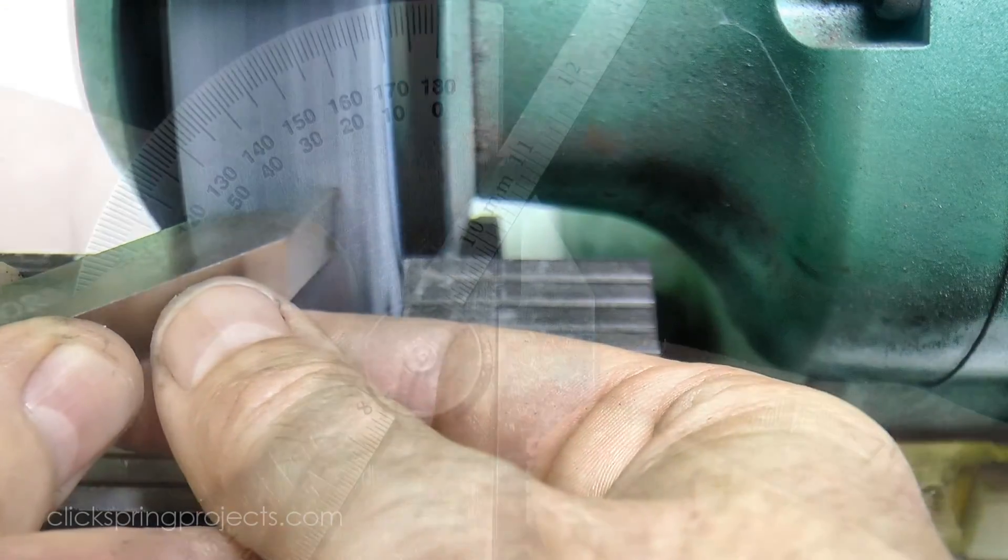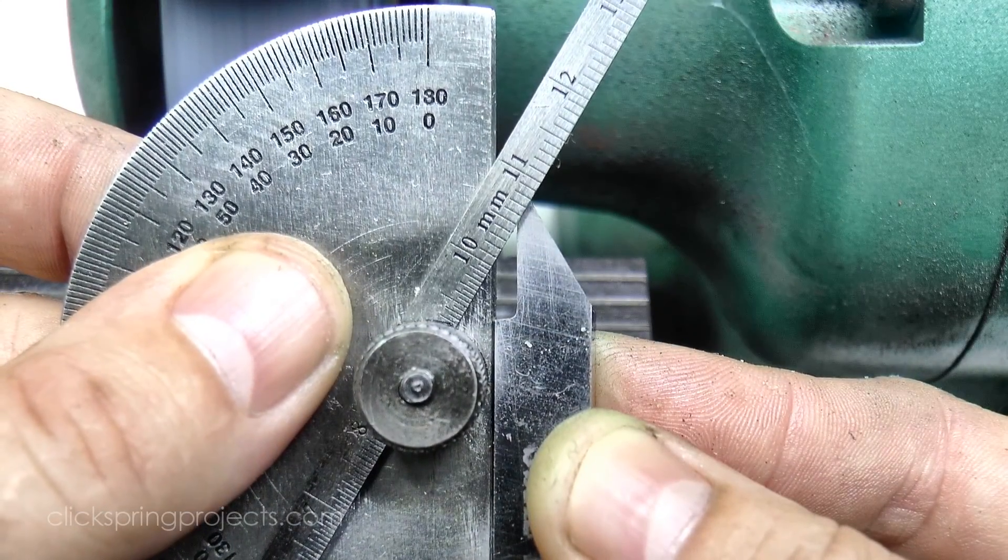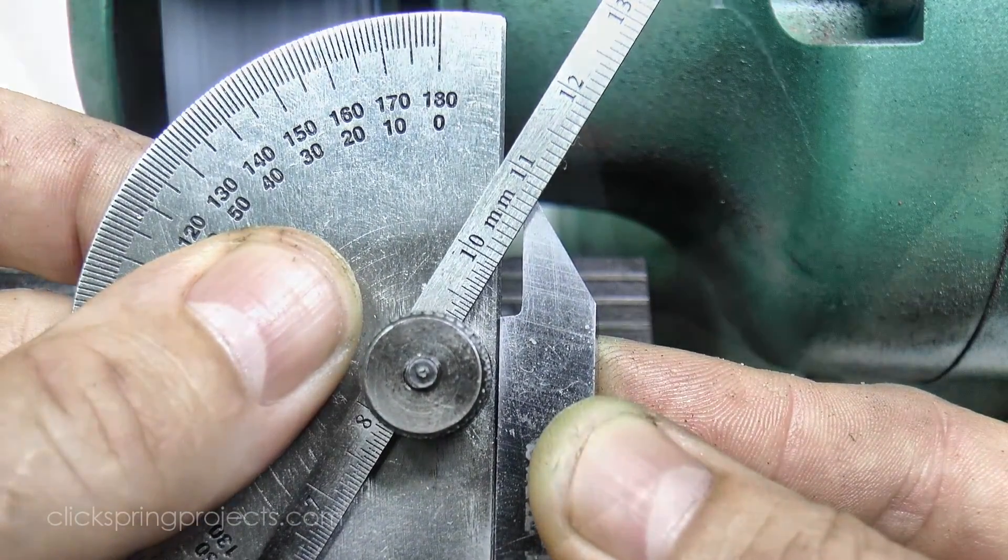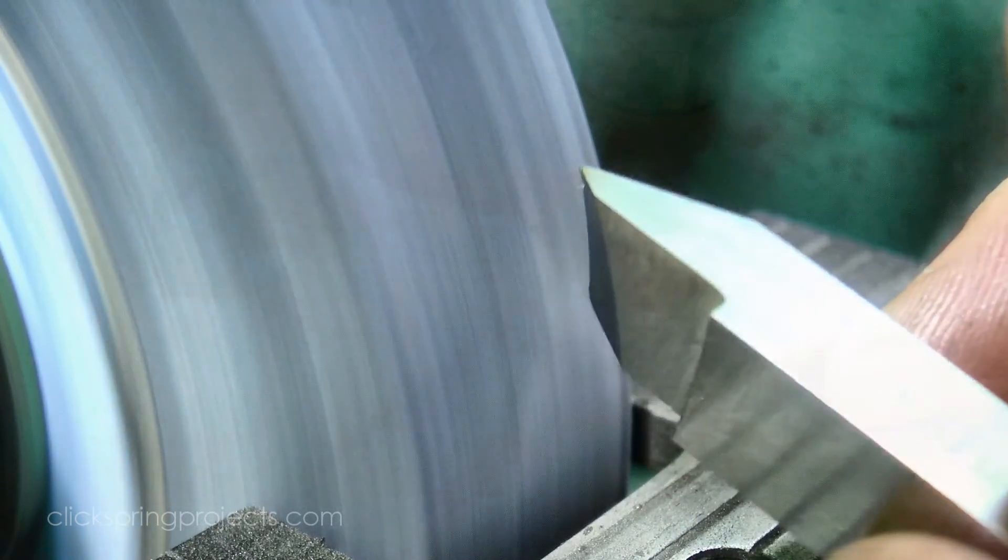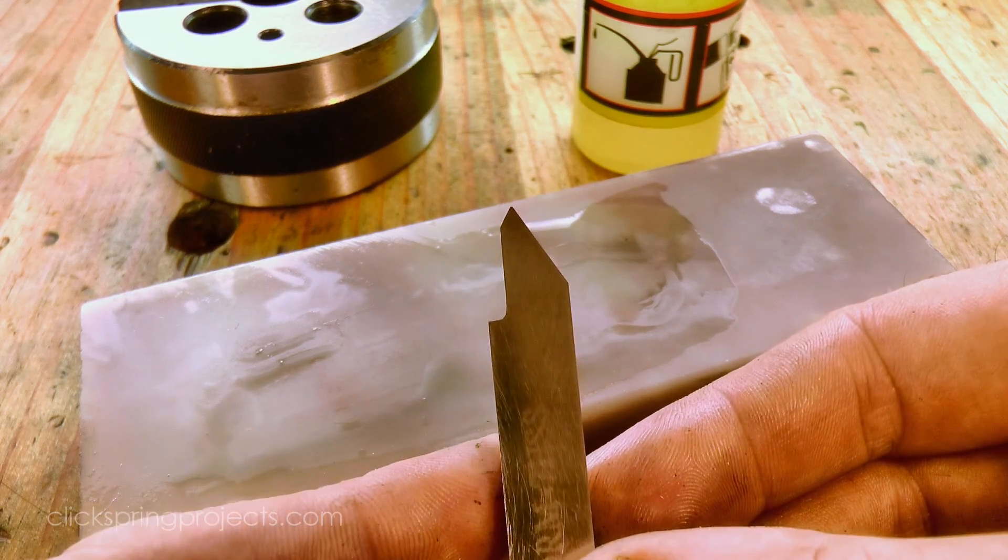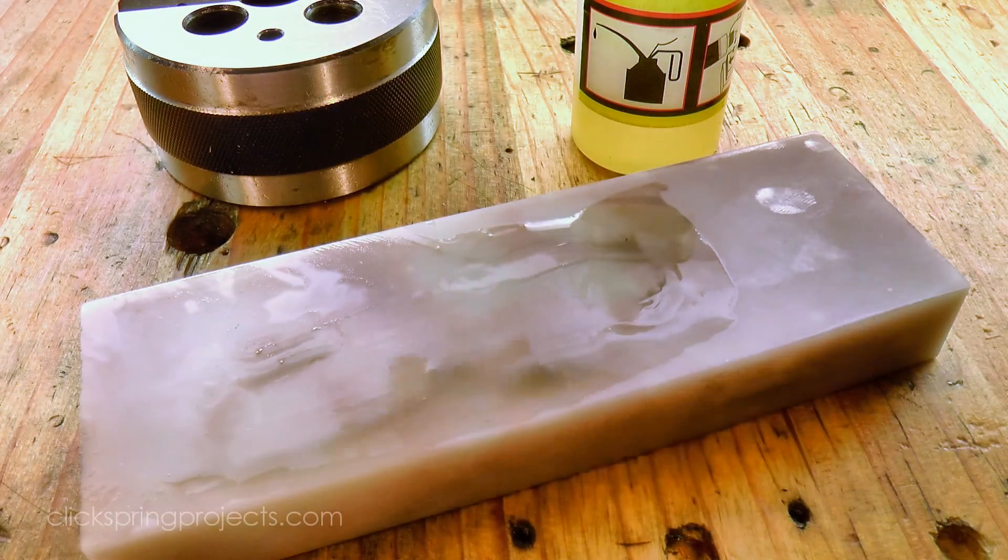First is the tool itself, which needs to have a 60 degree included angle, as well as the appropriate relief clearance formed. A light hone on an oilstone, cleans up the small burr left on the top surface by the grinder, and the tool is ready for work.